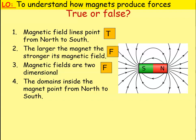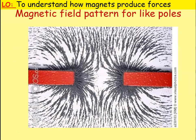Question three: magnetic fields are two-dimensional — that's false. Even though we draw them as two-dimensional, they're actually 3D; they bulge out and affect a massive area around them. Question four: domains inside the magnet point from north to south — that's false. They could point south to north; as long as they're all pointing in the same direction, that's what makes it magnetic.